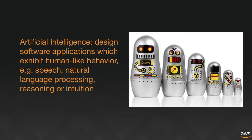A simple definition for artificial intelligence is trying to design software applications and systems which exhibit human-like behavior. A lot of this deals with human perception like speech, computer vision, natural language processing, and of course the ability to display some sort of reasoning, some sort of intuition, and the ability to predict the future by looking at the past. In a nutshell, we're trying to build things that behave like humans across a number of capabilities.